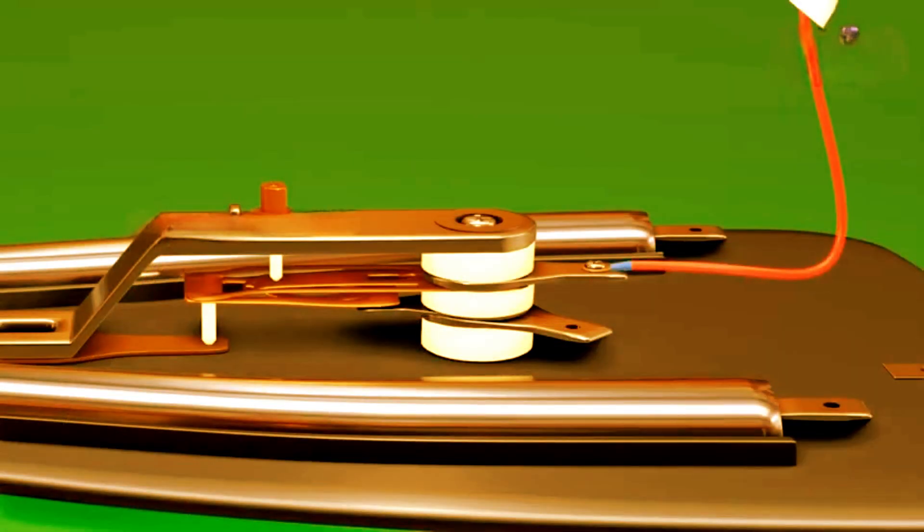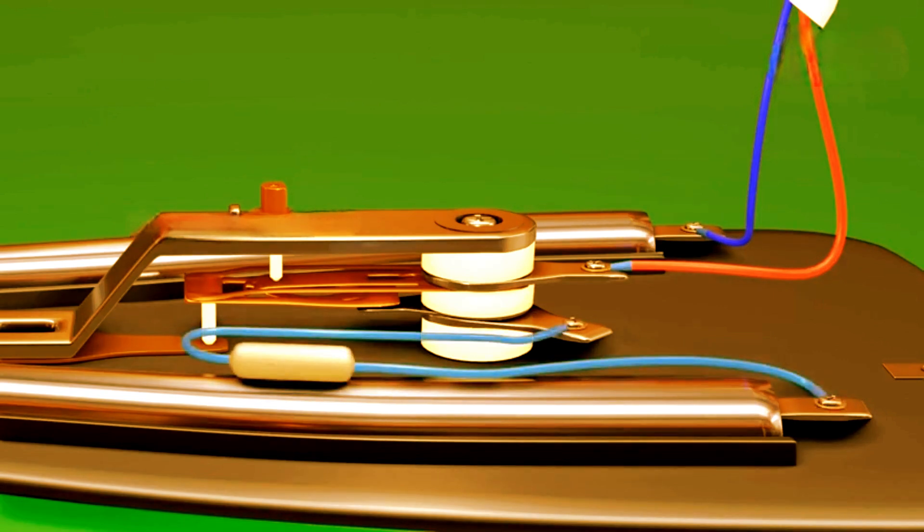There is also a thermal fuse for safety. If the thermostat fails and the iron gets too hot, the thermal fuse will cut off the power to prevent a fire. So here is the thermal fuse that you are seeing.